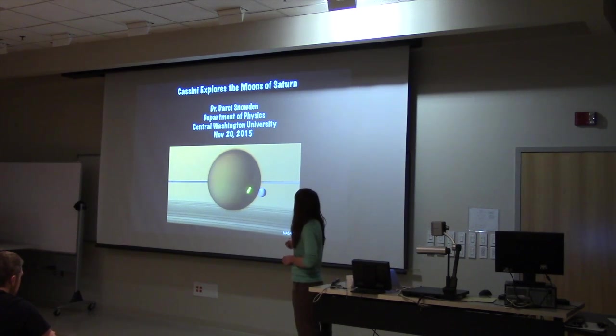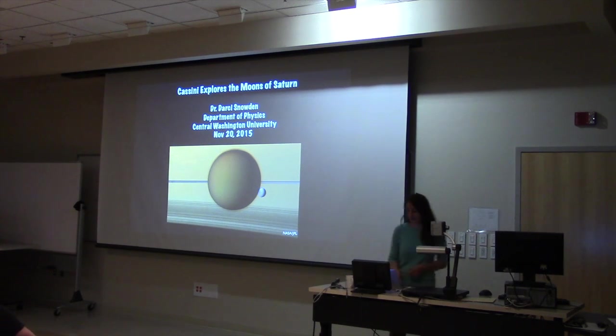This is one of the pretty pictures. This is Titan, my favorite moon. In the background is Saturn. This is the rings here that you can see, and that's one of the other moons of Saturn.